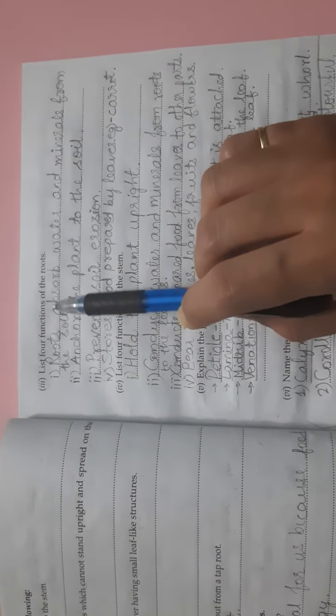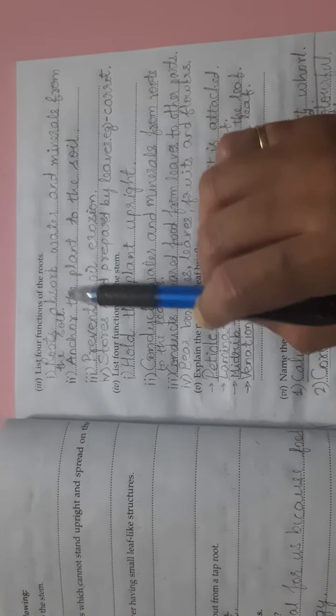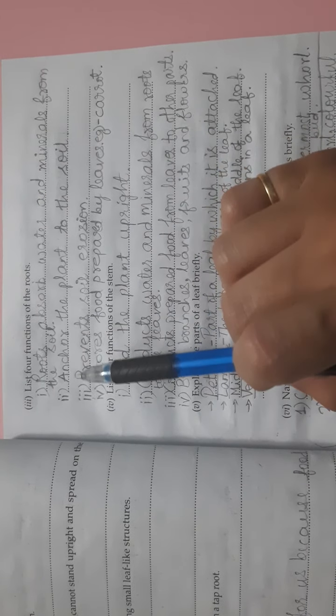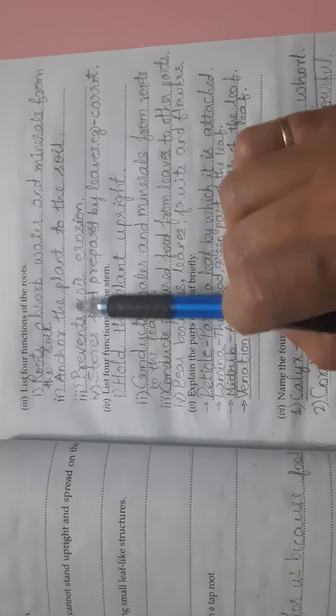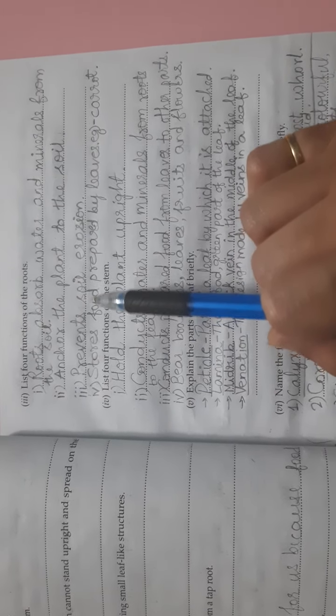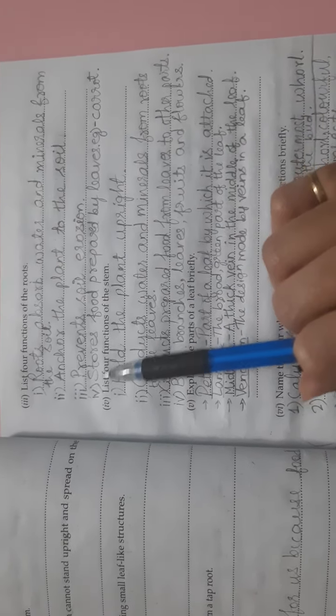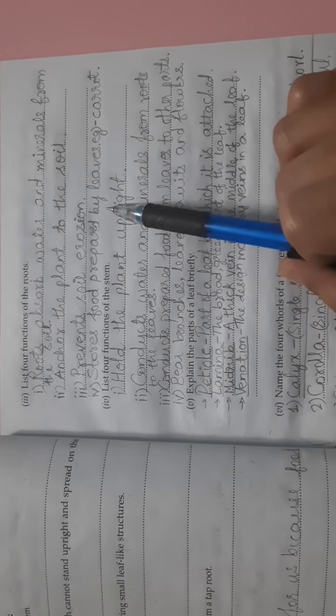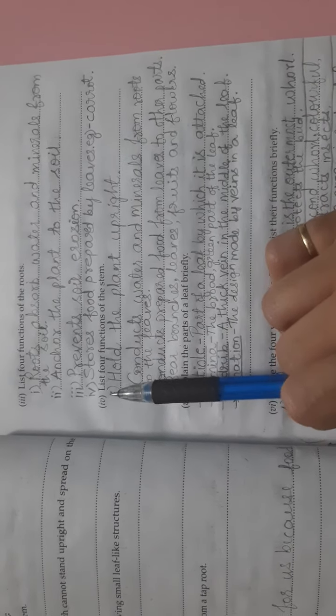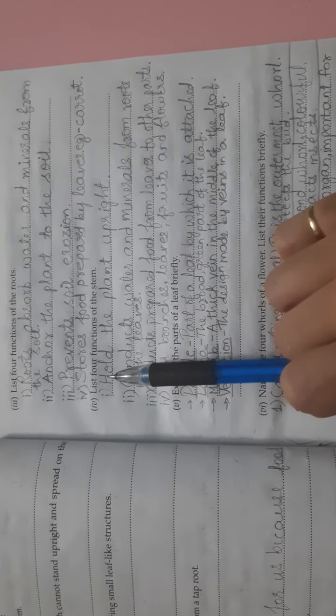Third, list four functions of the roots. First, roots absorb water and minerals from the soil. Second, roots anchor the plant to the soil. Third, prevents soil erosion. Fourth, stores food prepared by leaves, example carrot.